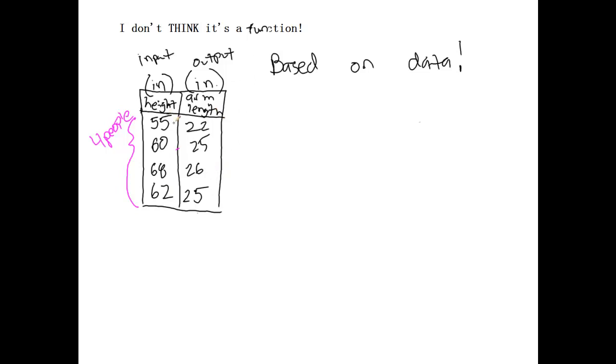And the answer is, well, does every input, does every height, every unique height have just one arm length? Well, I don't see any height that's in here more than once. I see 55, 60, 68, 62. So there's not even a possibility that one input value can possibly have two output values. So I would say that yes, output is a function of input.